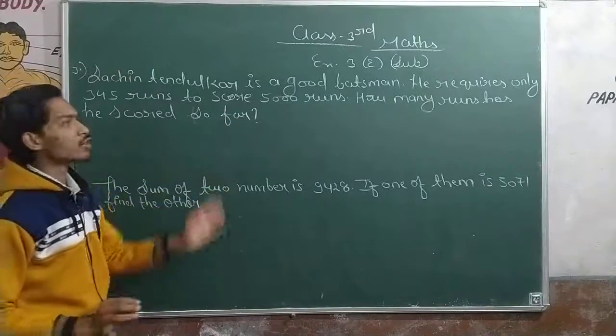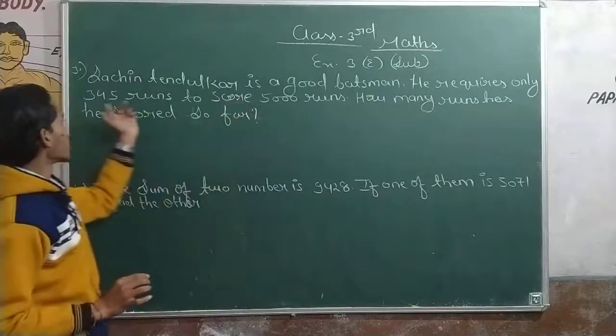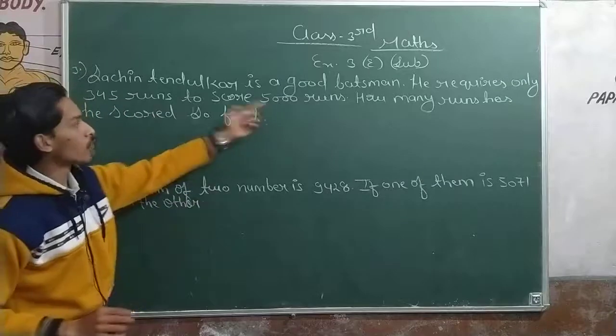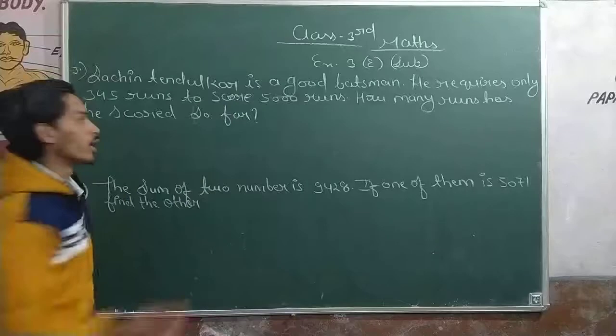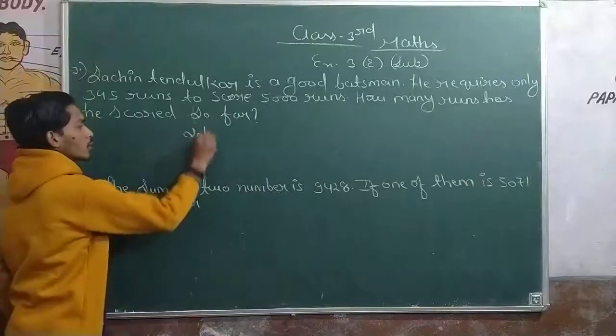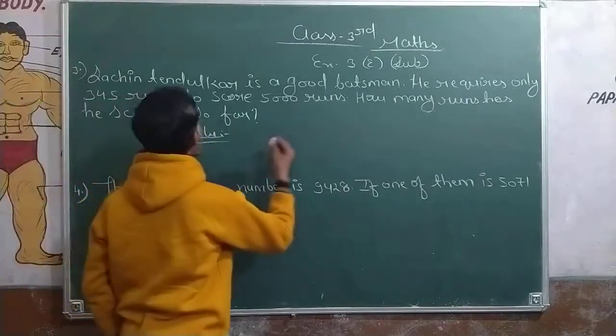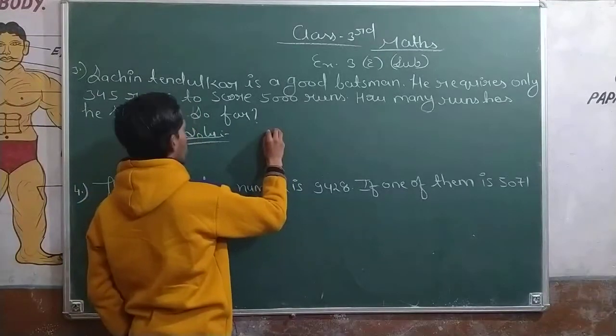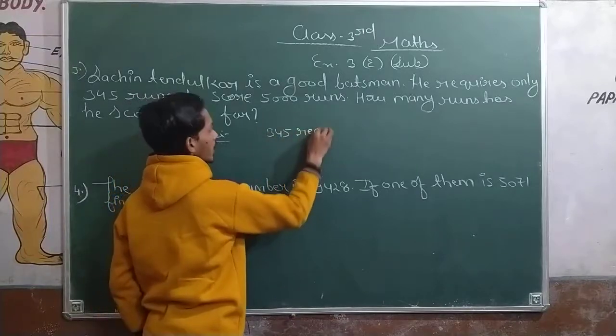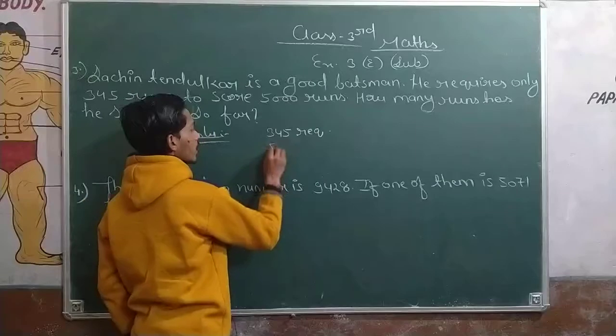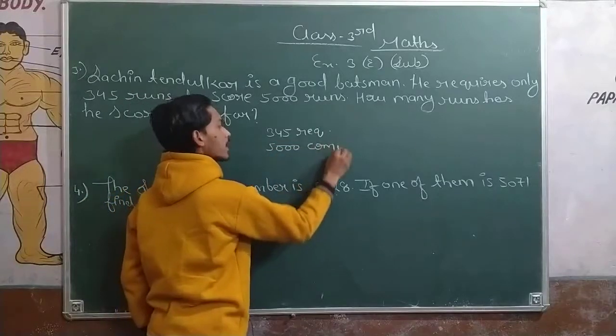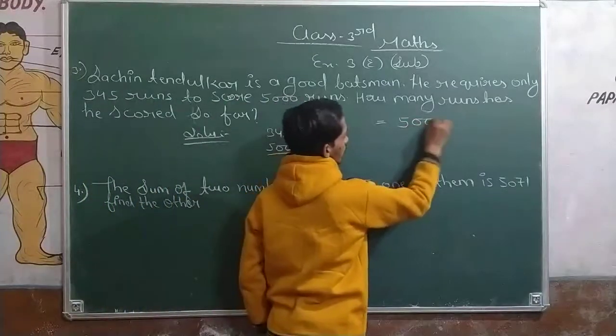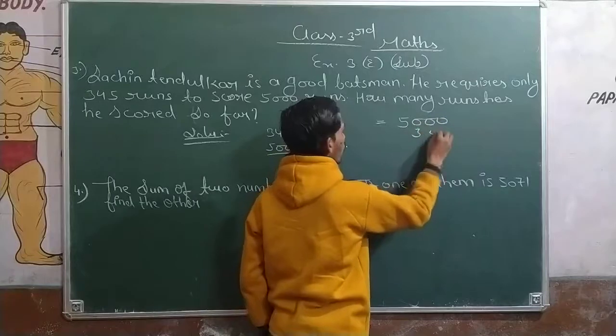What is the goal of the batsman who scored 5000 runs? 345 runs. So now we have to know how many runs he scored so far. 5,000 minus 345 runs. So now we have to know how many runs he scored. Requirements are required. 345 is required. How many runs are required? 5,000 is required. This rate is required, equal is required.